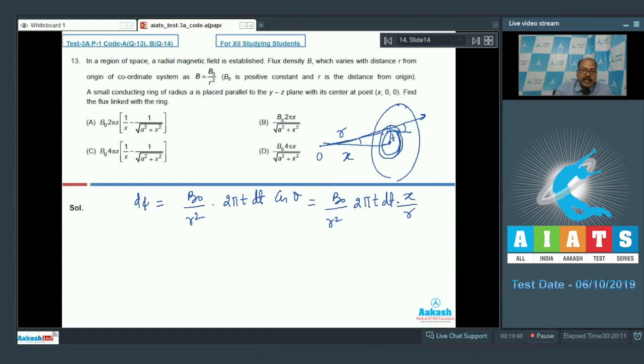So, we need to integrate it, the T will vary from 0 to A, the radius of the ring. So, the phi is equal to B0 into 2 pi X, X will be a constant throughout. So, we need to integrate it, integral of T dt by R cube. Now, the interesting part is this, that R square is equal to X square plus T square, which means R dr equals T dt. So, we can replace T dt by R dr.